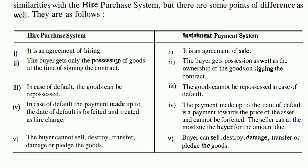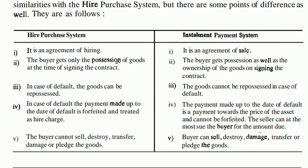The second point: in the Hire Purchase System, the buyer gets only possession of the goods at the time of signing the contract — not ownership. But in the Installment Payment System, the buyer gets ownership of the goods when the contract is signed with the seller.